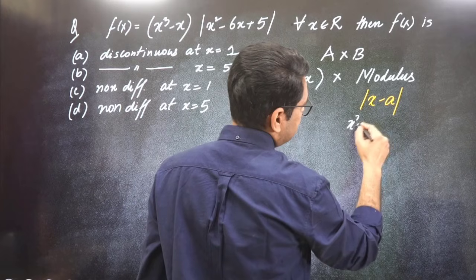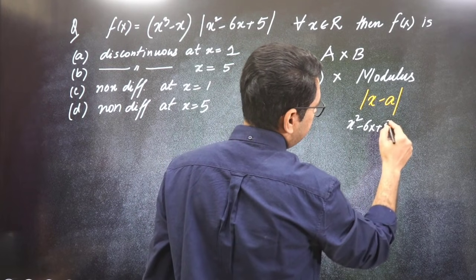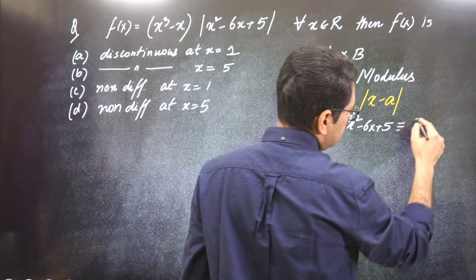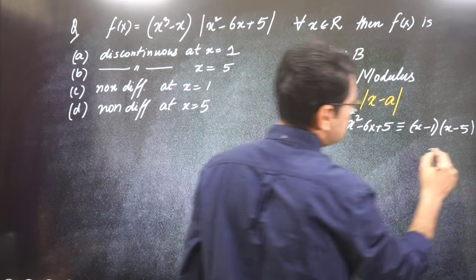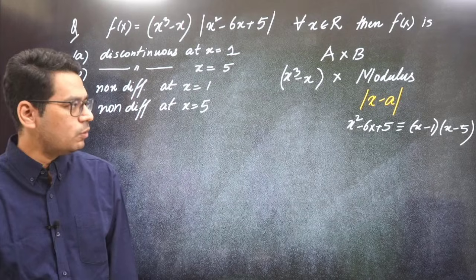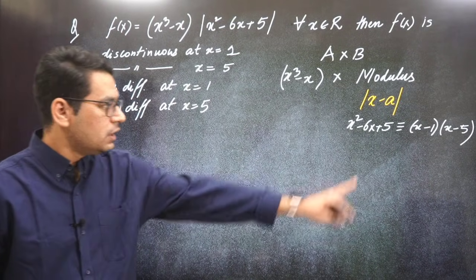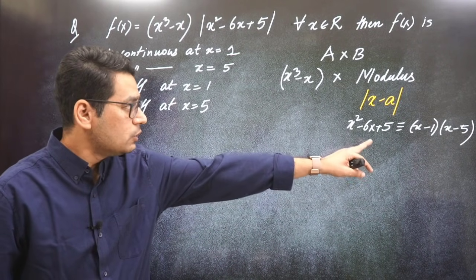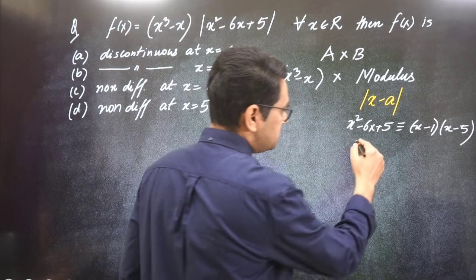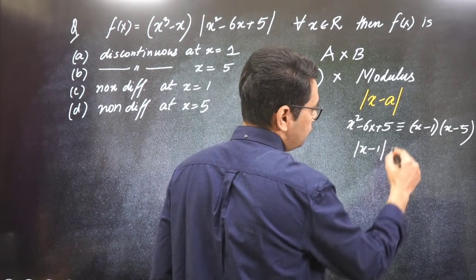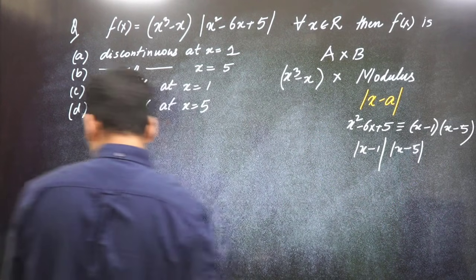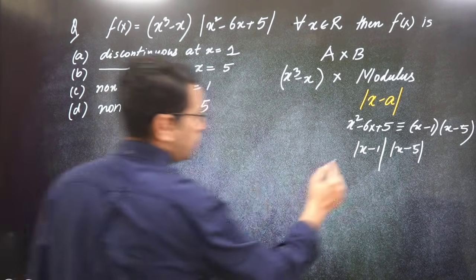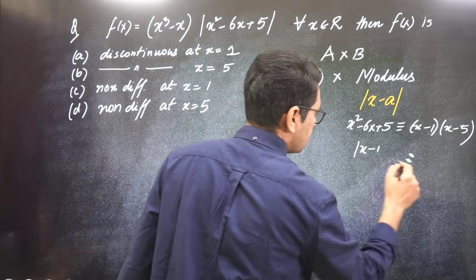So if I look here, I'm doing the same thing. x² minus 6x plus 5. We can easily break this into (x-5)(x-1) sort of thing. This easily factors. So if this breaks, then by the same logic this becomes mod of (x-1) times mod of (x-5). I should keep it as separate mod.